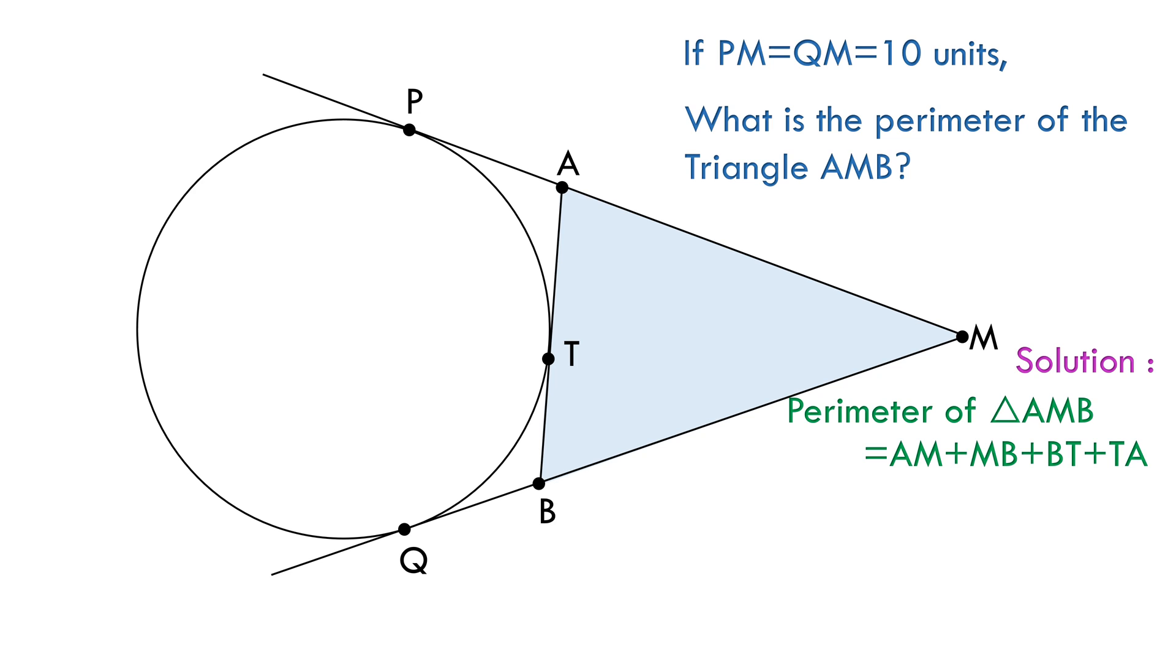If we look in the figure, we can see that tangents PA and TA meet at common point A, so they will be equal. Similarly, QB and TB are tangents meeting at common point B, so they will also be equal.